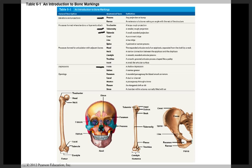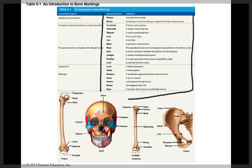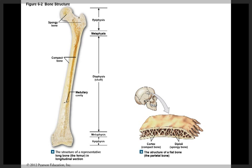You're going to hear all of these terms, including a fossa, which means a shallow depression, and a sulcus, which means a narrow groove. You'll also hear the word sinus, which means a chamber within a bone normally filled with air. Make sure that you take a look at all these anatomical terms and understand their definitions.